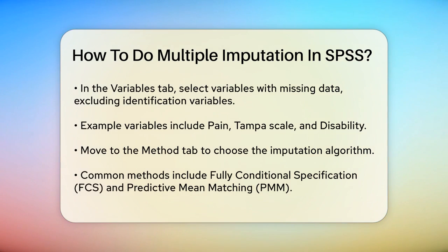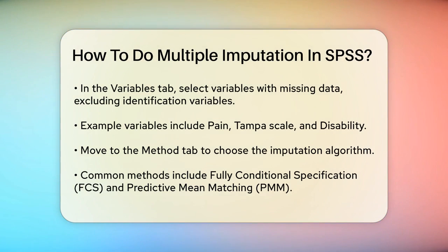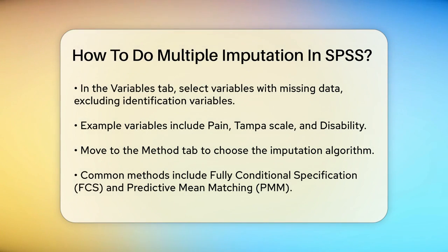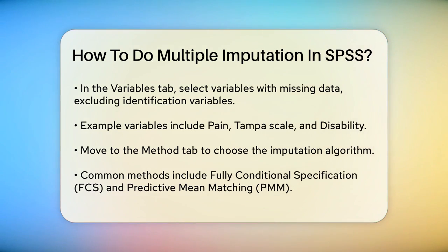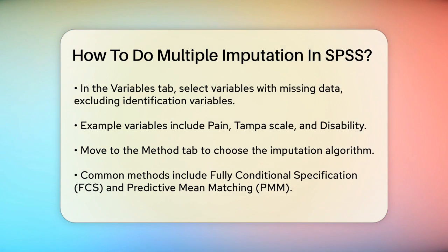Next, move to the Method tab. Here, you choose the imputation algorithm. A common method is Fully Conditional Specification, FCS, also known as the Bayesian Regression Imputation Method, or Chained Equations. You can also use Predictive Mean Matching, PMM, for continuous variables, which is often preferred over the default linear regression method in SPSS. In this tab, you can also adjust the number of iterations. The default is 10, but it's recommended to increase this to 50 for better results.